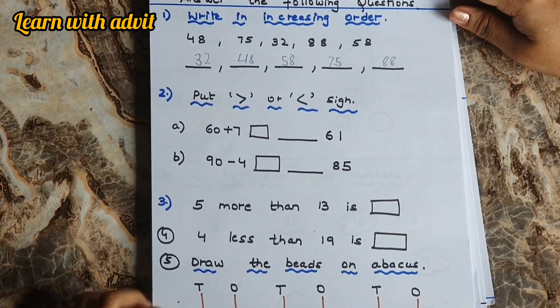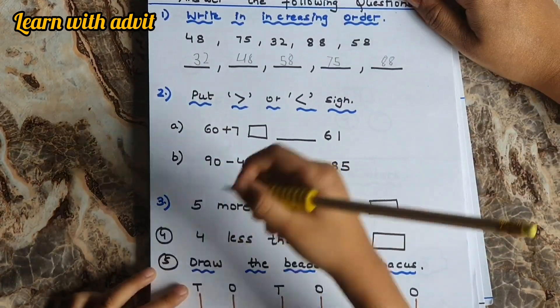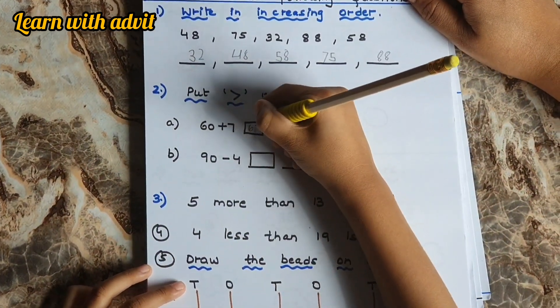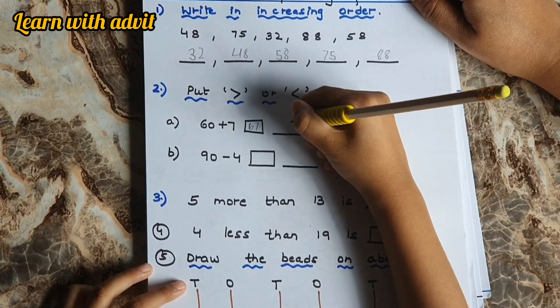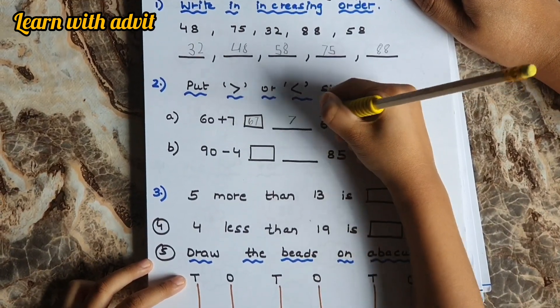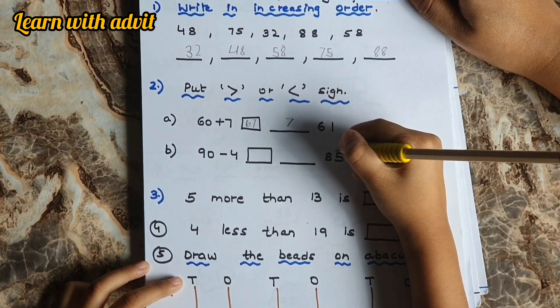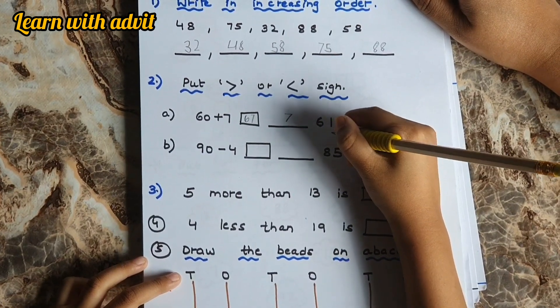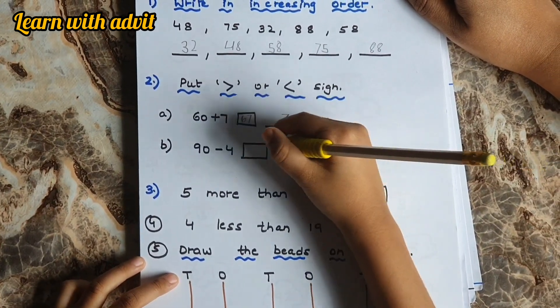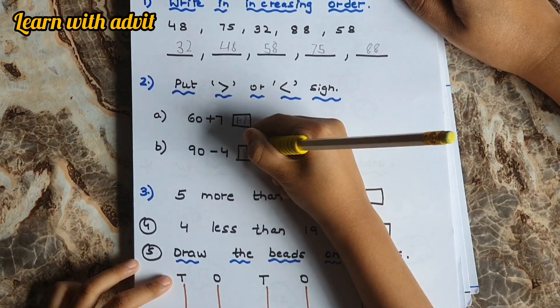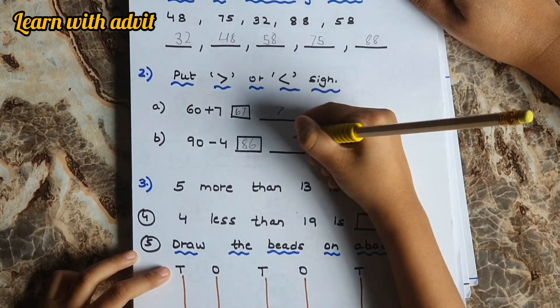Next question is for greater than and less than. First you have to solve it. 60 plus 7 is 67, so 67 is greater than 61. 90 minus 4 is 86, so 86 is greater than 85, or 85 is less than 86.